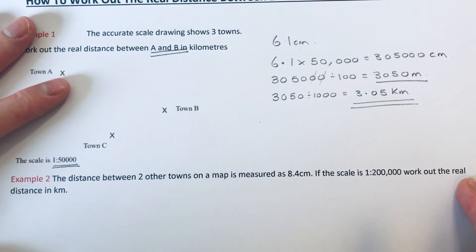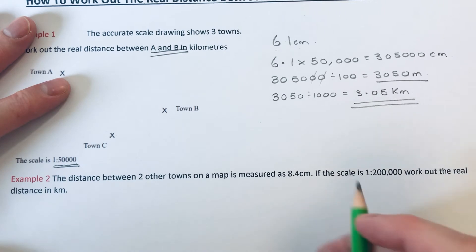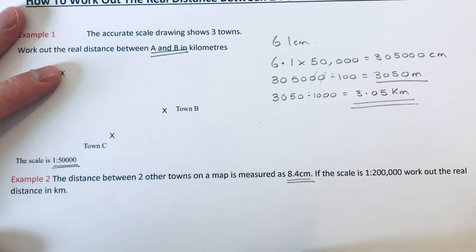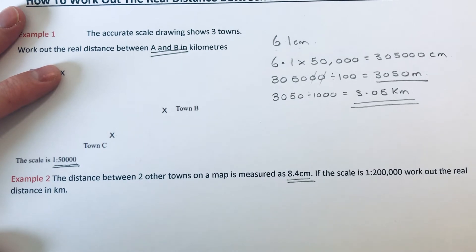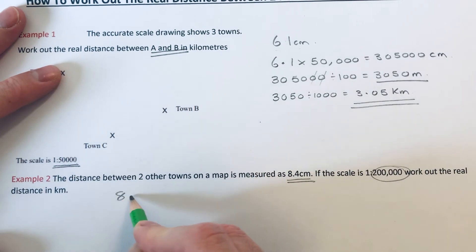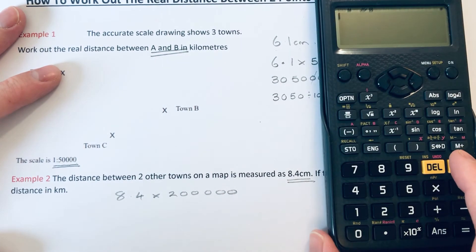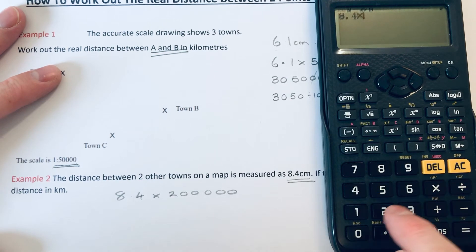Again, the distance on the map between our two towns is 8.4 centimeters. If we multiply that by 200,000, that will give us the real distance between the two towns in centimeters. So 8.4 times 200,000.